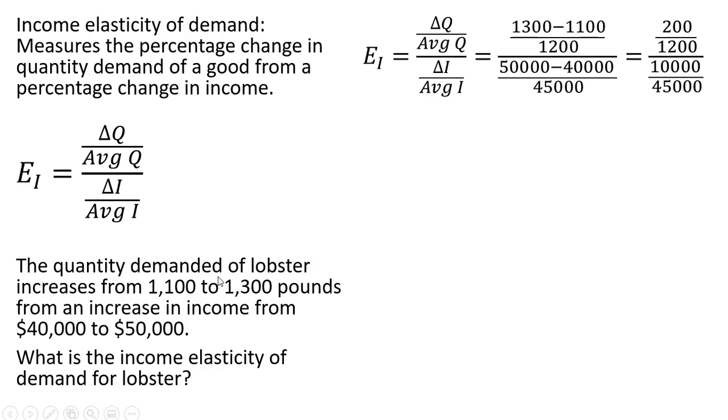So we're going to use that formula. The change in Q is just the increase in the quantity consumed, so 1,300 minus 1,100. We got a 200 unit increase in the quantity demanded of lobster. And then we're going to divide that by the average quantity or the midpoint. So the average of 1,300 and 1,100 is just 1,200.